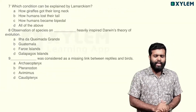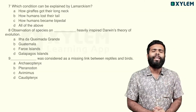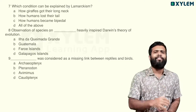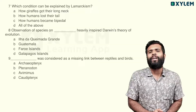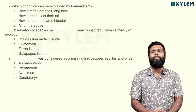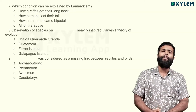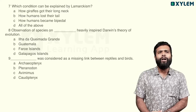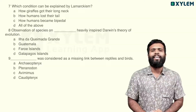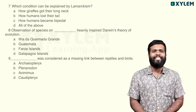Which condition can be explained by Lamarckism? Lamarckism is the use and disuse theory. Examples include the giraffe's long neck, humans losing their tail because we can't use it, how humans became bipedal, and the snake losing its limbs. So all of the above — option D — is the right answer.